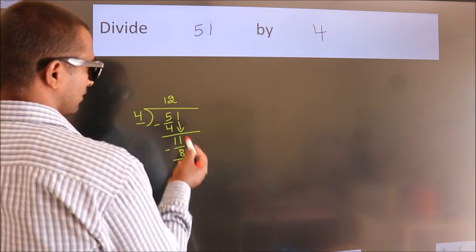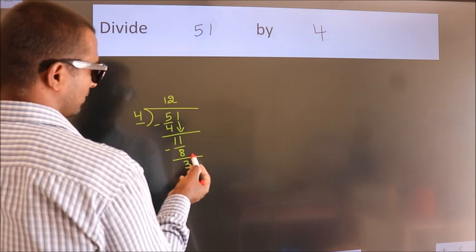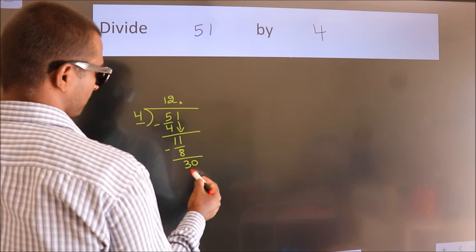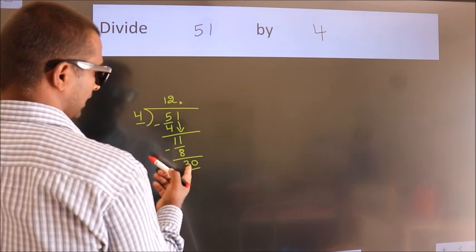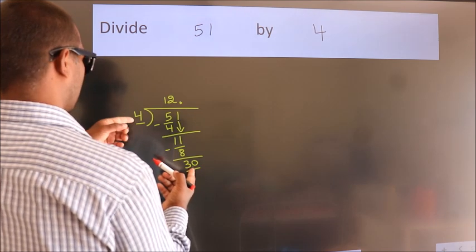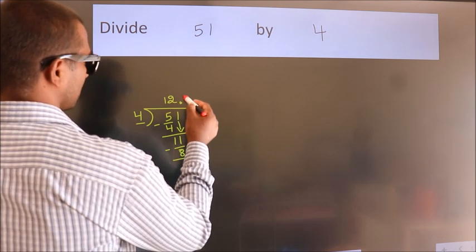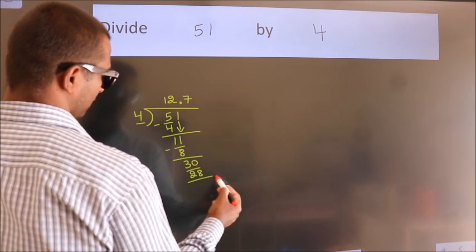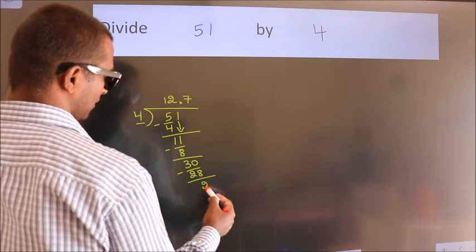After this, no more numbers to bring down. So what we do is put a dot and take 0. So 30. A number close to 30 in the 4 table is 4 sevens 28. Now we subtract. We get 2.